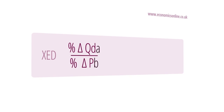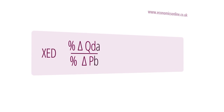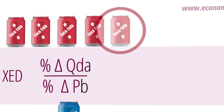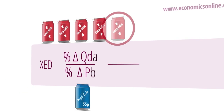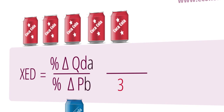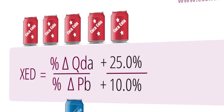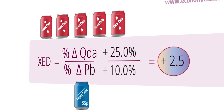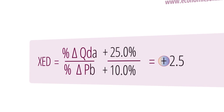For example, if as a result of a 10% increase in the price of Pepsi-Cola the demand for Coca-Cola increases by 25%, then the cross-elasticity of Pepsi with respect to Coca-Cola is plus 2.5. This is a positive value. As the price of Pepsi rises, the demand for Coca-Cola, a substitute, also rises.